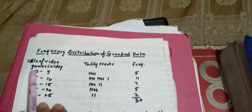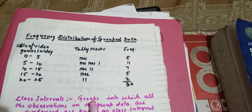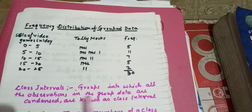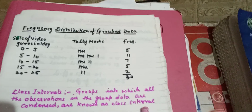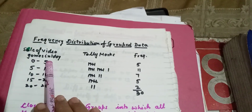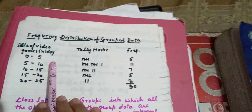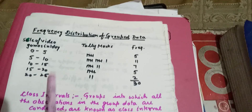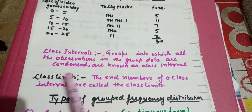The main thing here is class intervals. Groups in which all the observations in the grouped data are condensed are known as class intervals. For example: 0 to 5, 5 to 10, 10 to 15, 15 to 20, and 20 to 25 — all these are class intervals.